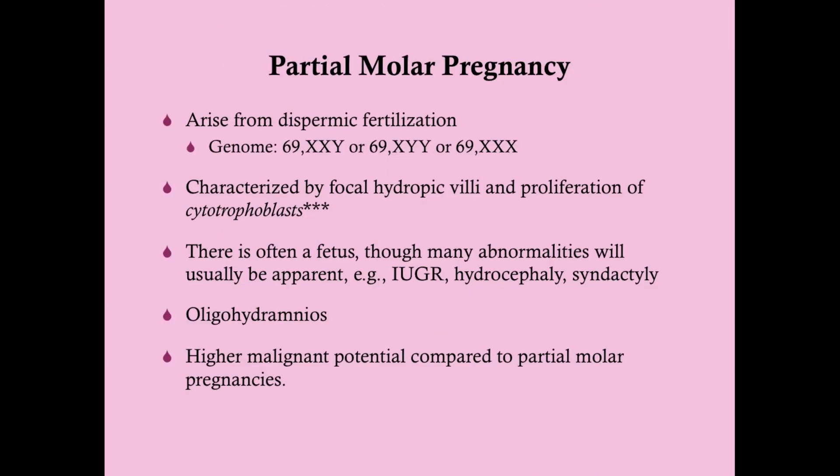Moving on to partial molar pregnancy: this arises from dispermic fertilization of a normal egg, so the genome is triploid. It is characterized by focal hydropic villi and proliferation of cytotrophoblasts. Cytotrophoblasts do not produce HCG — the syncytiotrophoblasts do — so partial molar pregnancy is not characterized by the dramatically elevated HCG levels seen in complete molar pregnancy. That is one key point of differentiation.